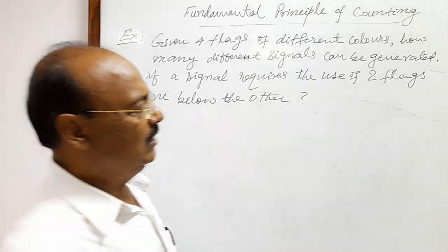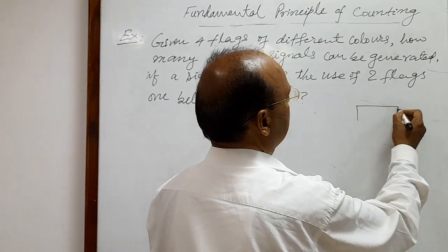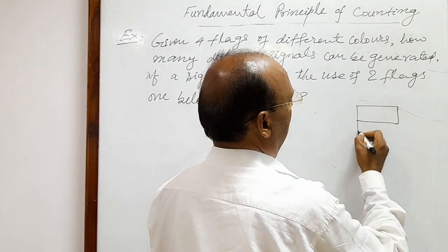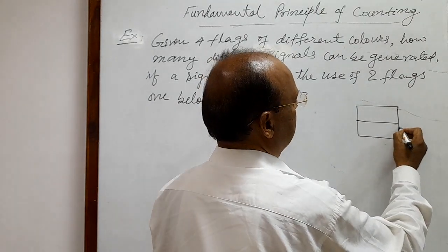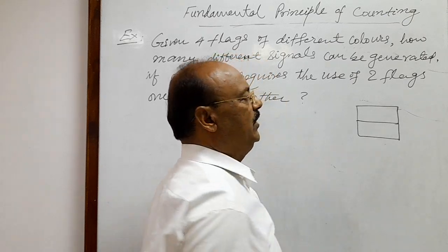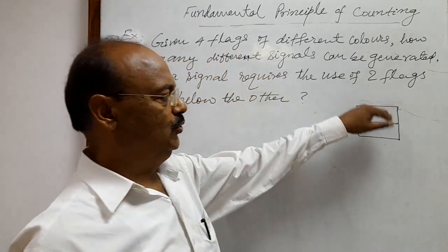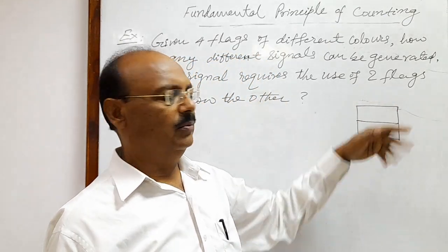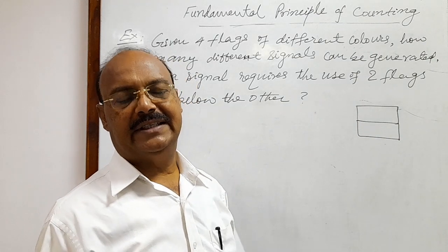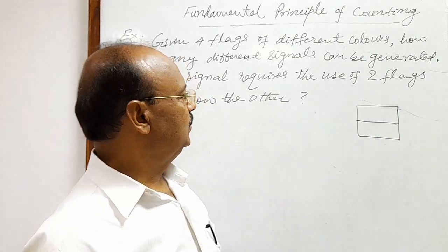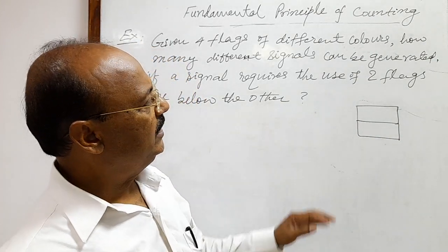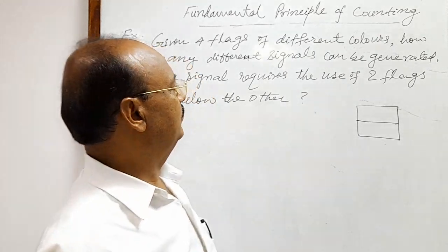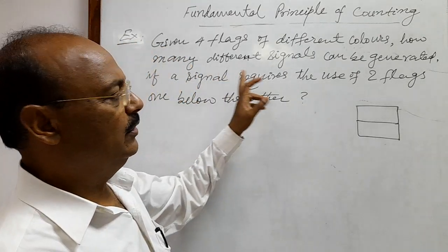One below the other means like this — one flag is here, another flag is below it. By combination of two flags of different colors, we form a signal. So how many different signals can be generated with the help of four different colors?